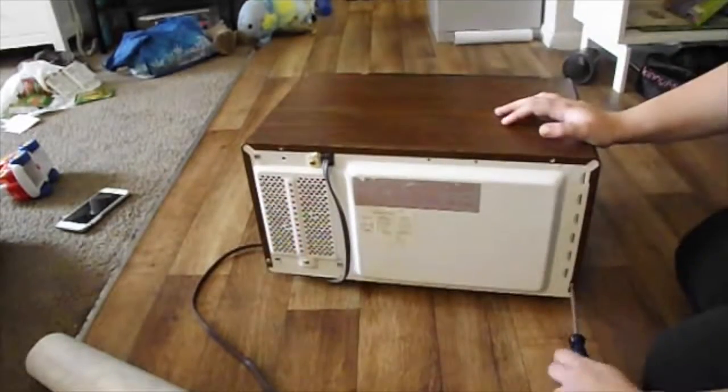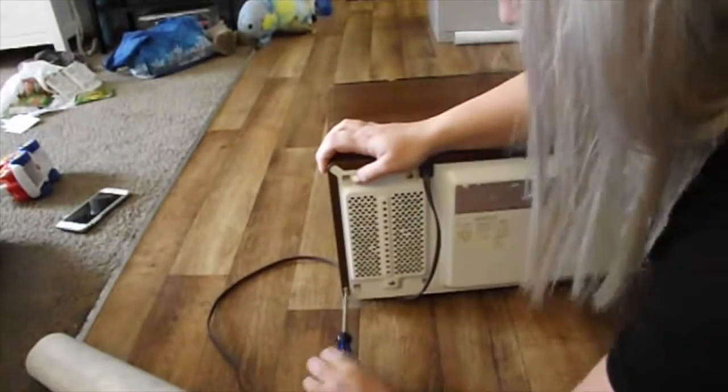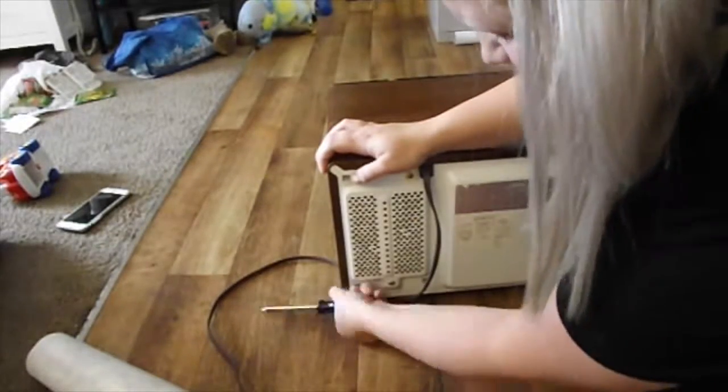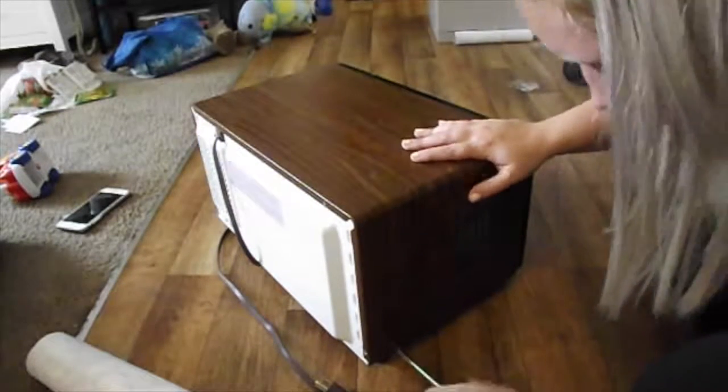And then we'll just be pulling off this casing. It'll make it a lot easier to apply the contact paper and it'll make it a lot easier to hide the fact that it is done.